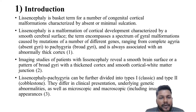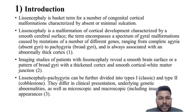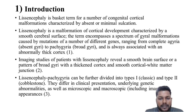Lissencephaly is a basket term for a number of congenital cortical malformations characterized by absent or minimal sulcation. It is a malformation of cortical development characterized by a smooth cortical surface. The term encompasses a spectrum of gyral malformations caused by mutation of a number of different genes, ranging from complete agyria — that is, absent gyria — to patchy gyria, broad gyria, and is always associated with an abnormally thick cortex.